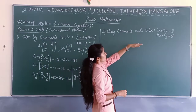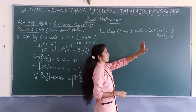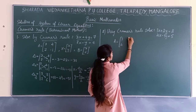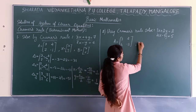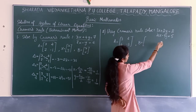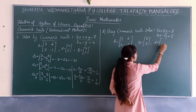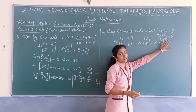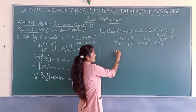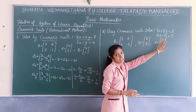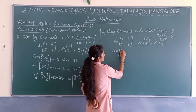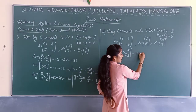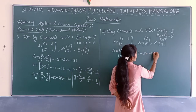Now let us go to the second problem with two variables. Matrix A = [[3, 4], [2, -3]]. Matrix B = [8, 5]. You can directly start with delta. Delta = 3×(-3) - 2×4 = -9 - 8 = -17.